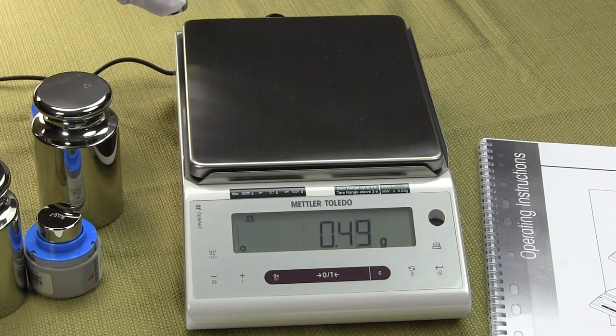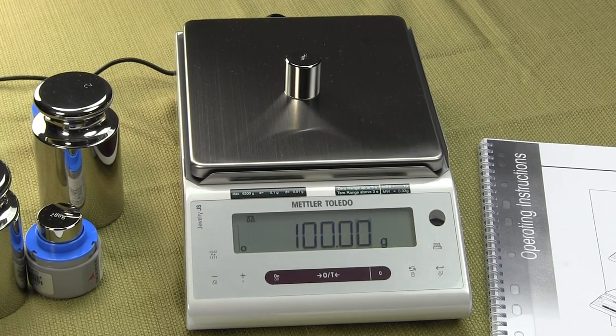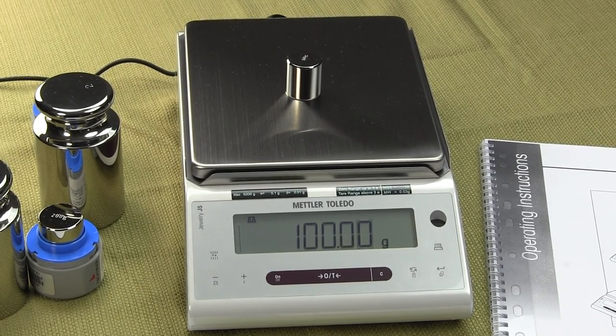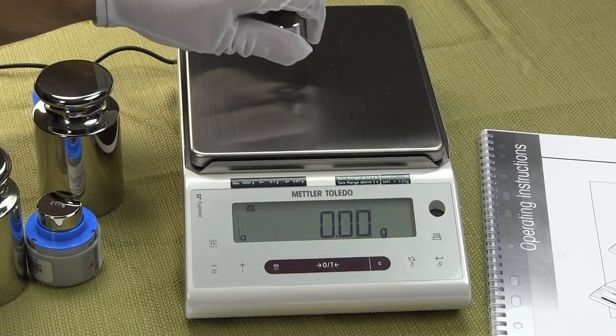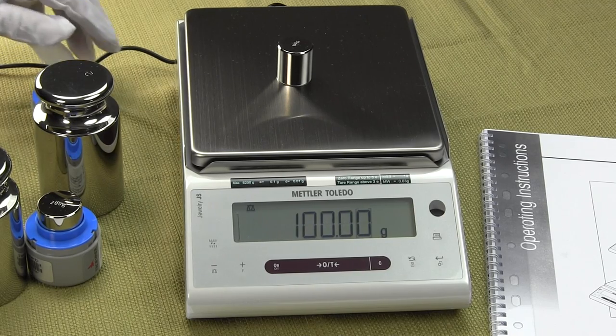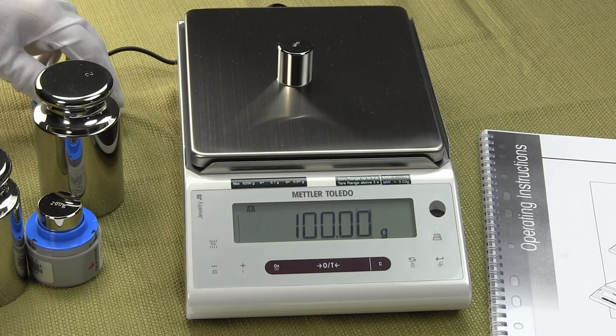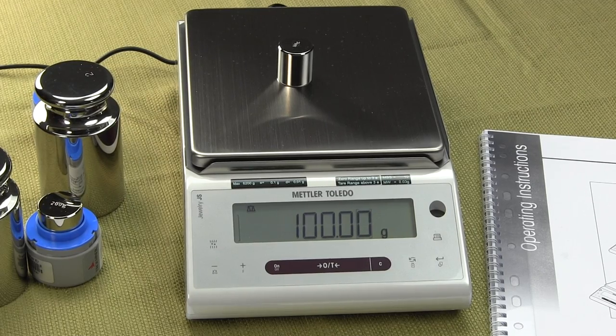The balance is made in Switzerland. One nice thing about Mettler Toledo with these JSs, they have not sent the balance overseas. They're made in Switzerland to maintain the quality.